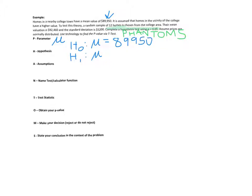And what we're testing is we think the homes in the vicinity of the college have a higher value. So we're going to test the idea that the mu is actually bigger in college towns. So there's our null and our alternative. We're going to have a right-tailed test.